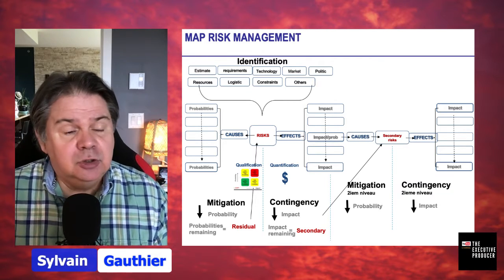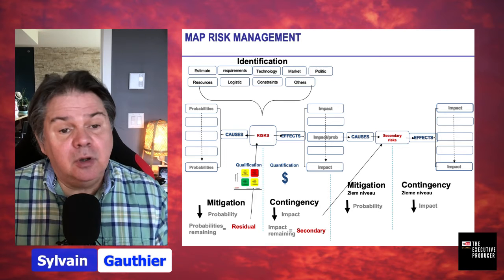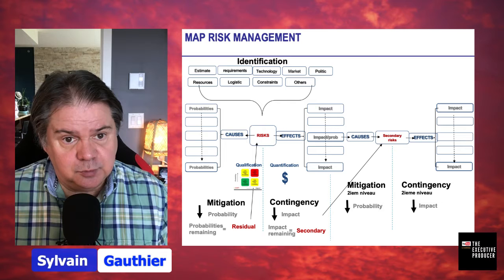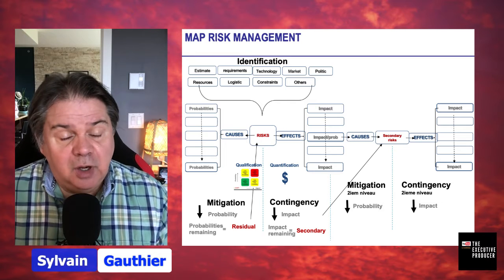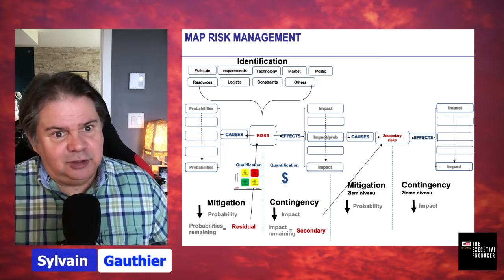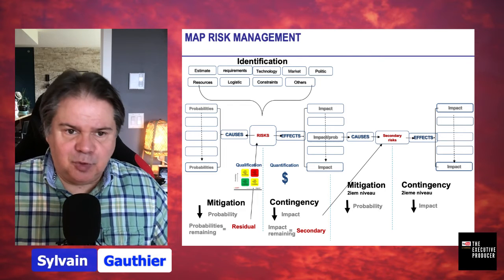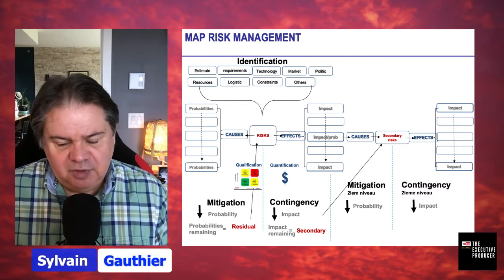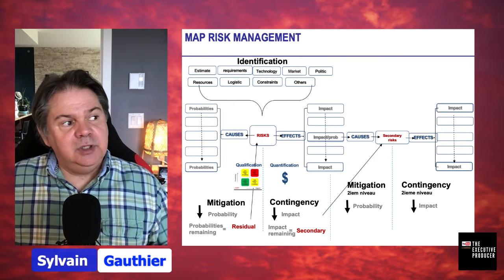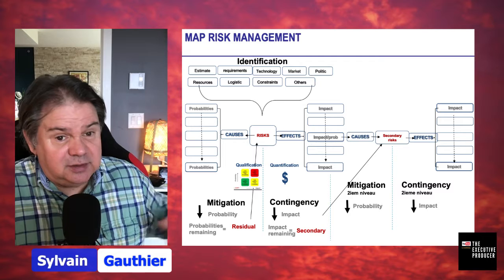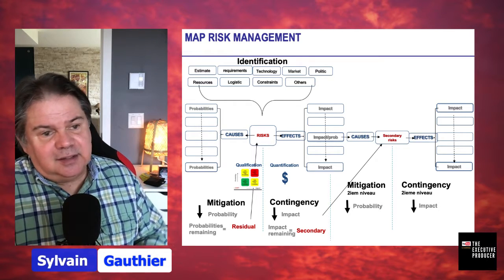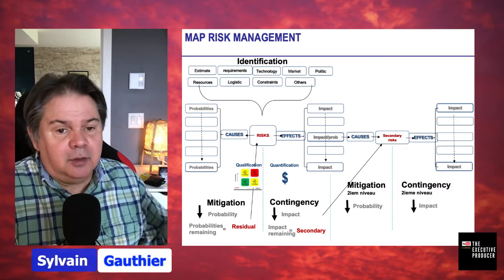We need to prevent problems before they become issues. But there are also certain things we know are there and we're going to deal with them if they become an issue, because we don't have the resource and we have a certain level of tolerance for that kind of potential problem. We need to understand the full picture — what areas we could take some chance on, and what areas are a no-go where we have zero tolerance.